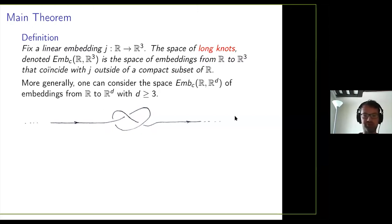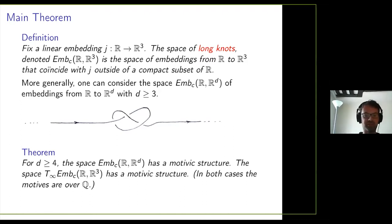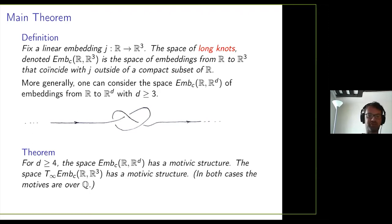The only difference: what's special about R^3 is that this space has many interesting connected components. The field of knot theory is about studying the set of components of that space. When d is at least four, it's a connected space, but it still has higher homotopy groups, so it can be interesting as a space. Here's a picture of a typical element in the space of long knots in R^3. Let me state the main theorem in a slightly imprecise form. For d at least four, the space of embeddings of R into R^d has a motivic structure. In the case of knots — the space of embeddings of R into R^3 — it's not quite that space that will have a motivic structure; it's what I denote T-infinity of that space, which I will define in the talk. You can view this as an approximation to the space of knots. In both cases, the motives are over Q.